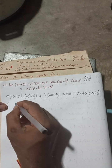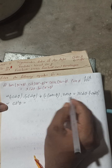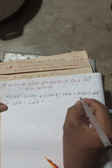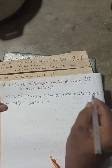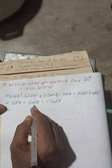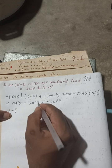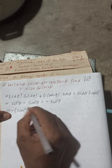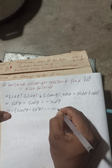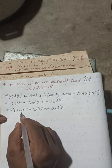Substituting into the equation: on the left side, (−cot θ)(−cot θ) gives +cot²θ, and (−cosec θ)(cosec θ) gives −cosec²θ. On the right side, x · cot θ · (−cot θ) gives −x·cot²θ. After simplification using the identity cosec²θ − cot²θ = 1, we get cot²θ − cosec²θ = −1, so −1 = −x·cot²θ.